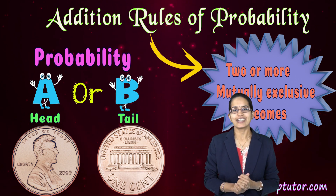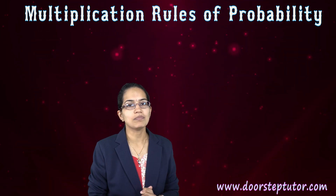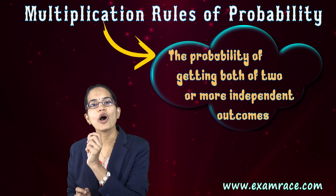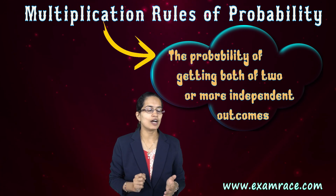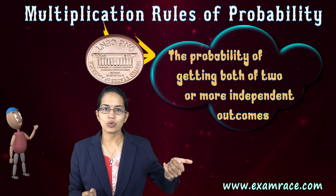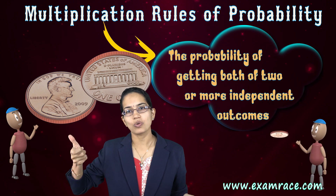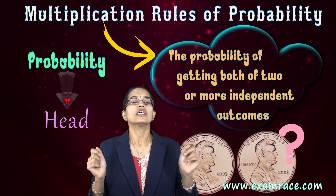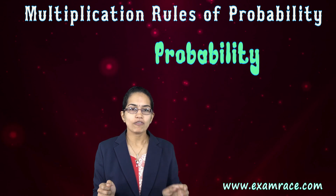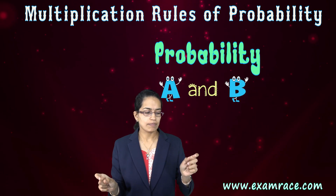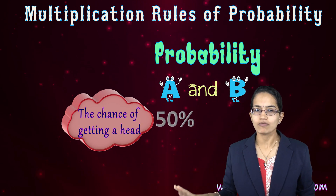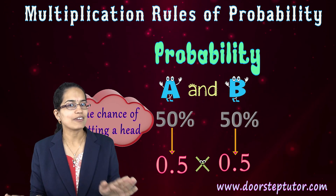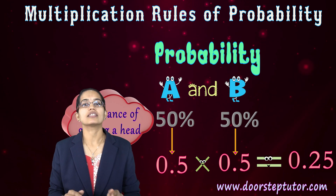Furthermore interesting is the multiplication rule. In the multiplication rule, we are trying to understand the probability of getting both of two or more independent outcomes. If I toss one coin I can get head or tail, and I toss another coin I can get head or tail. The probability of getting head on both coins is the probability of A and B. Each coin has a 50% chance, so 0.5 × 0.5 = 0.25. That is the multiplication rule.